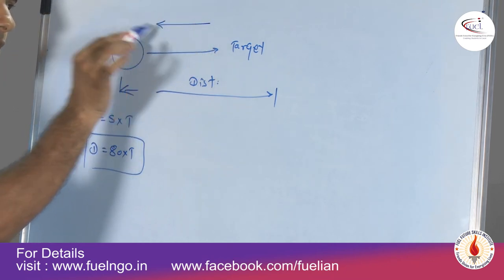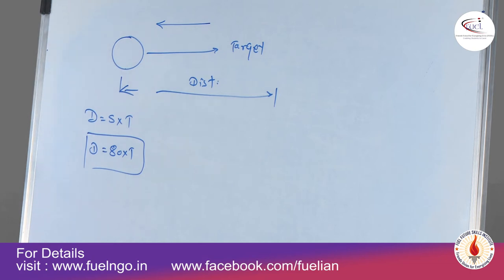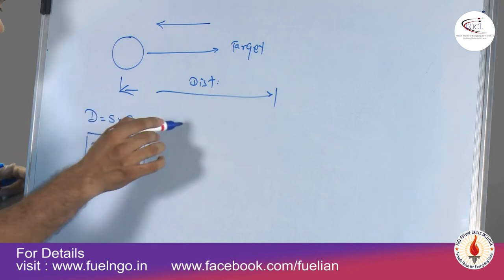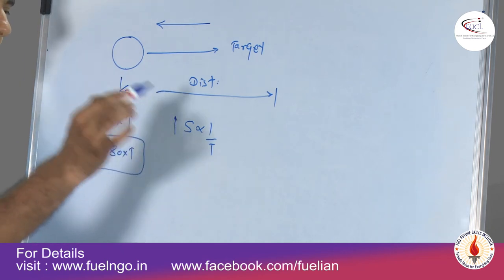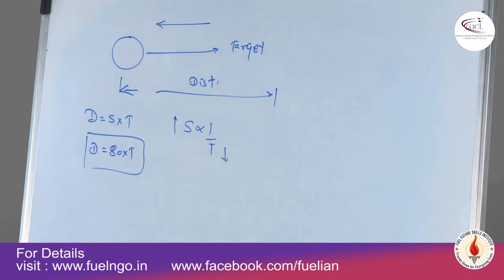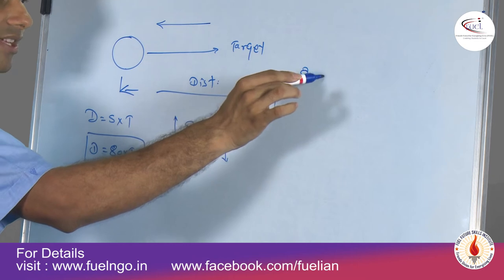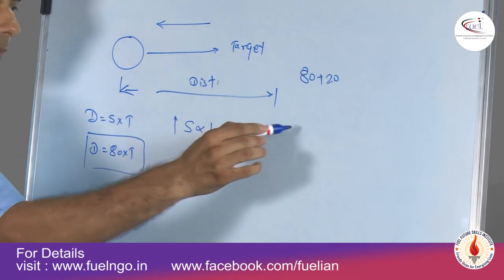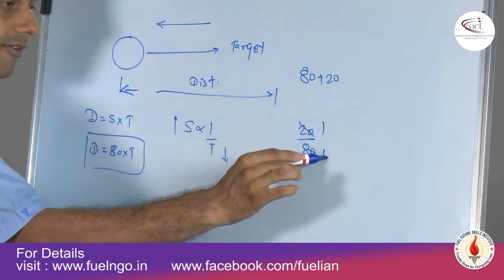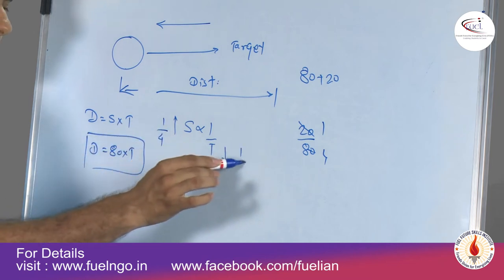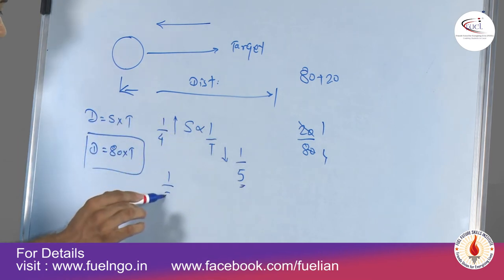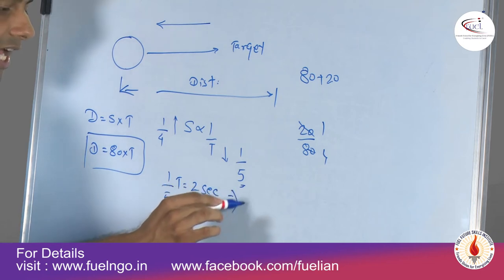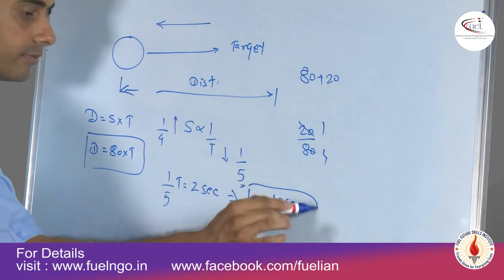If the wind moves in the same direction it adds to the speed. Since distance is constant, speed is inversely proportional to time. Speed increases from 80 to 100, an increase of 20 on a base of 80, which is an increase of 1/4. So time decreases by 1/5. That 1/5 reduction equals 2 seconds, therefore the original time T equals 10 seconds.